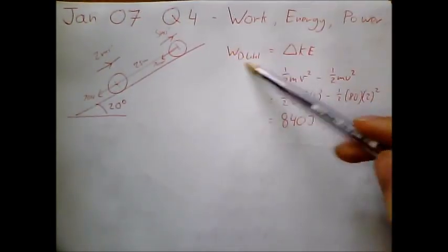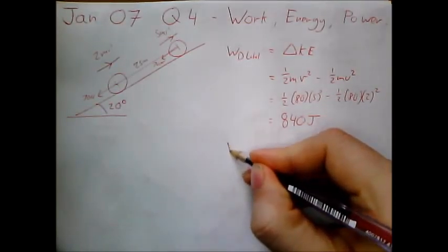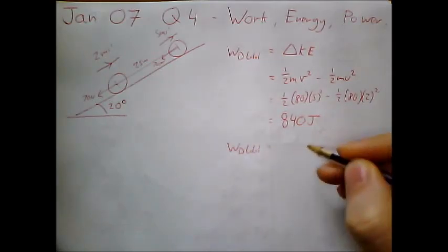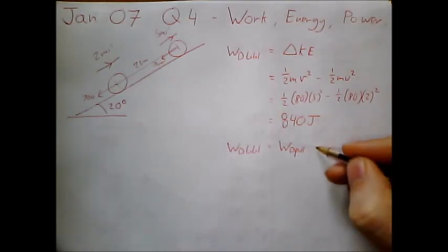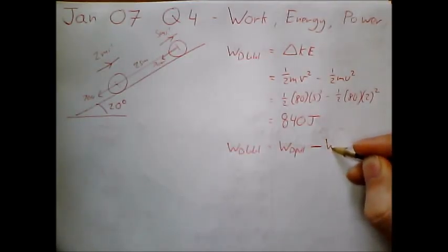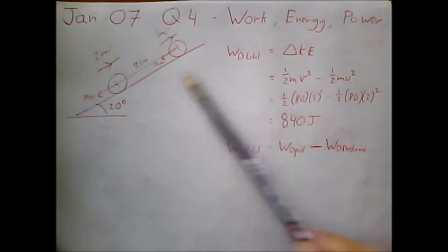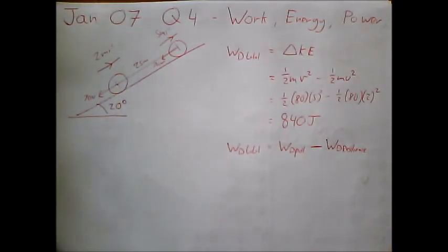But we don't want the work done of the whole system. We want the work done of the pulling force. So within our whole system, we have the work done of the pulling force. But there is also a work done against our pulling force, which is our resistances. Work done by resistances. And this is made up of the resistance force and gravity working against us.